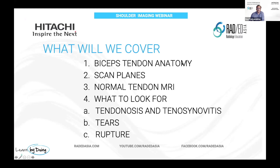We're going to start with the tendon anatomy — the proximal anatomy — and also look at the scan planes we're going to use to assess them, because the biceps tendon is not a straight structure; it curves around, so we need to know which scan planes to use. Then we'll look at the normal appearance of the tendon and all the abnormalities.